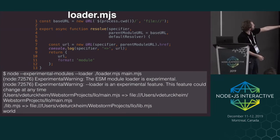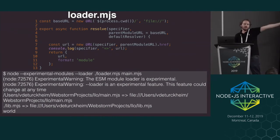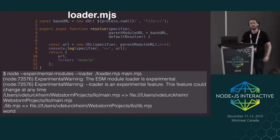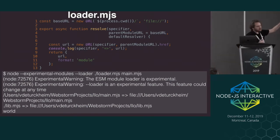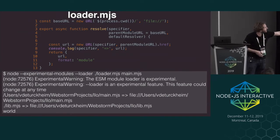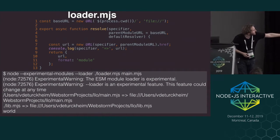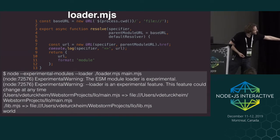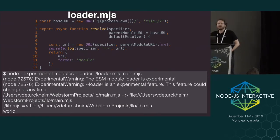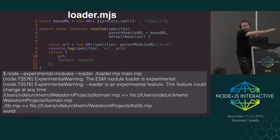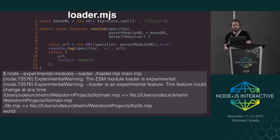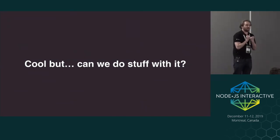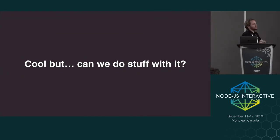We start the program with node --experimental-modules --loader, giving the loader as a parameter, then main.mjs. We get two warnings this time because we are using another experimental feature. But then you start to see logs: main.mjs resolves to the same URL, and lib.mjs resolves to the full URL to where the module is actually located. And then of course we get 'world' from the code. This API enables us to more cleanly, with just an asynchronous function, hook into everything that is loaded in Node.js.